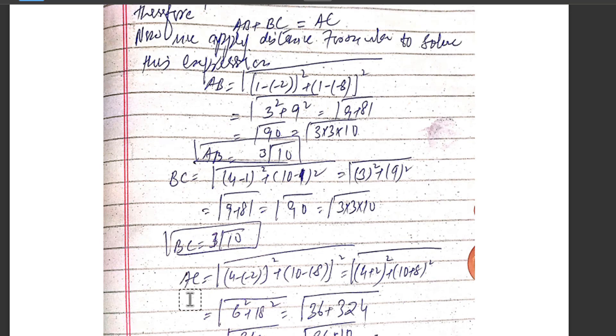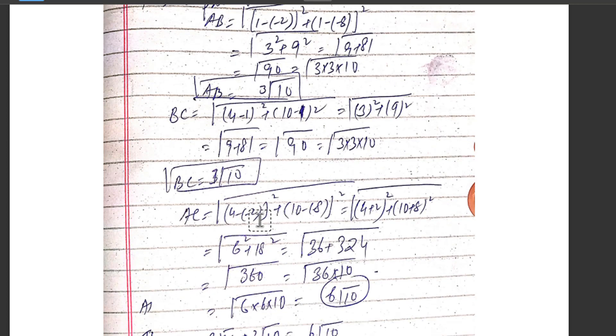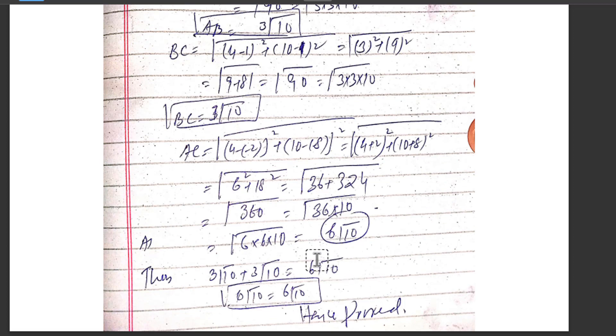Now the third line is the distance AC between the starting point and the last point, which must equal the summation of AB plus BC. AC equals square root of [(4 - (-2))² + (10 - (-8))²] = square root of [6² + 18²] = square root of [36 + 324] = square root of 360. This equals square root of (36 × 10) = 6√10.